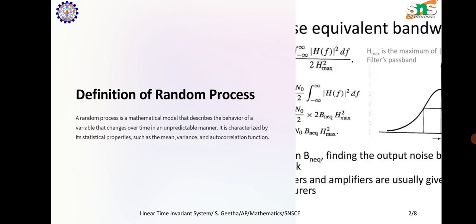The definition of a random process is a mathematical model that describes the behavior of a variable that changes over time in an unpredictable manner. It is characterized by its statistical properties such as mean, variance, and autocorrelation function.